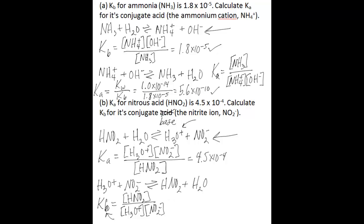The important relationship to know here is that Kb is equal to Kw divided by Ka. So you can take 1.0 times 10 to the negative 14, which is Kw, and divide by the Ka, which is 4.5 times 10 to the negative 4. If you do the math, you're left with 2.2 times 10 to the negative 11.